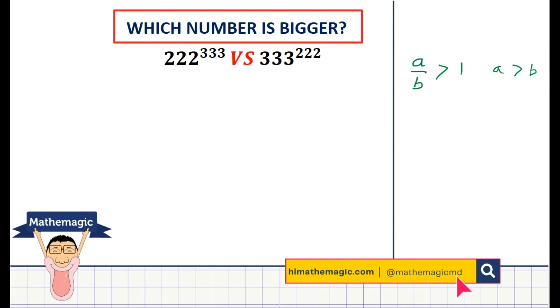And in this case here, we can see that 222 is to a higher power. So perhaps it'll be a really good idea here to take 222 to the power 333, which is a much larger power, and put that at the top and try and prove that this number is indeed bigger than the bottom one. So let's divide 222 to the power 333 by 333 to the power 222.